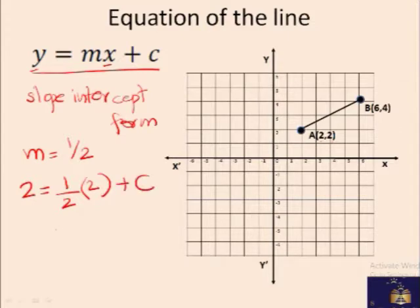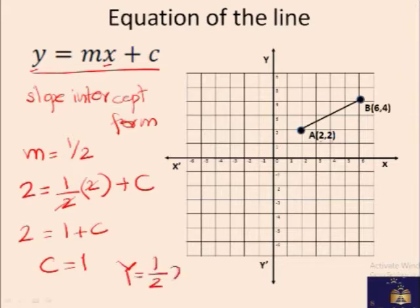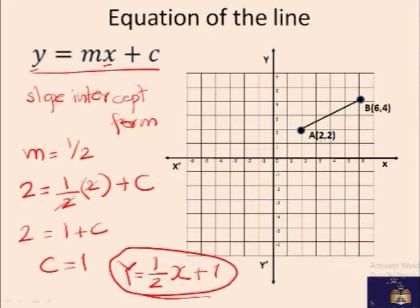This constant we don't know at the moment. If we simplify this, so this is 2 equals 1 plus C, which means C comes out to be 1. If we substitute this value of C in Y equals MX plus C, so we have Y equals half X plus 1. That is the equation of this line, which can also be simplified as 2Y equals X plus 2.